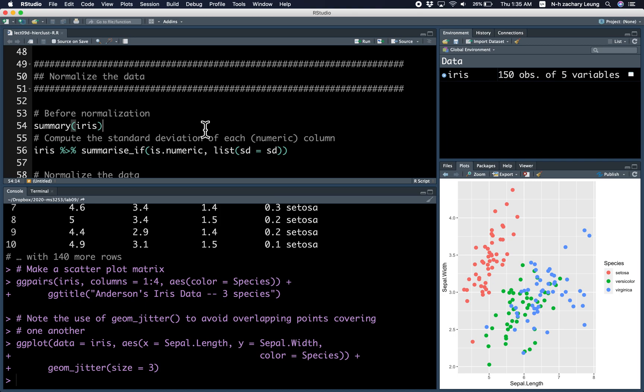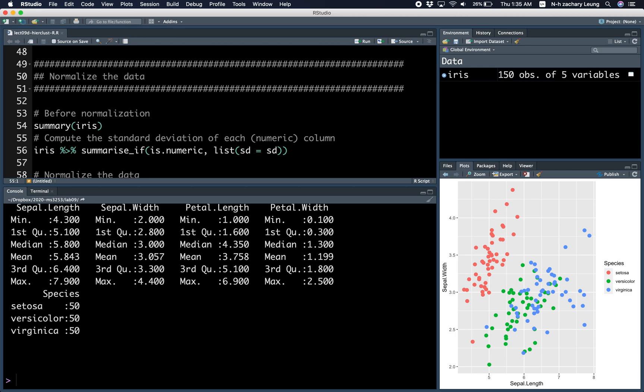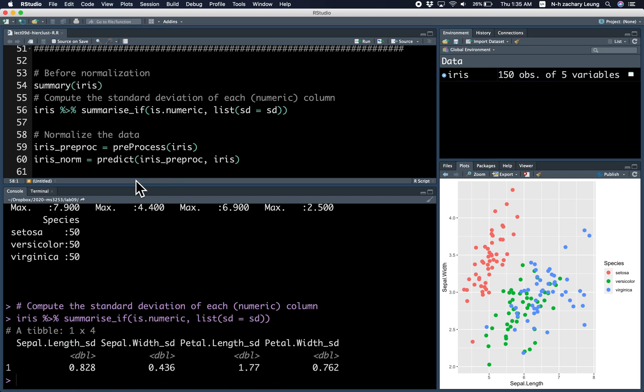If you look at the iris data frame before normalization, you'll see the summary statistics and the standard deviation. Here I use the summarize_if function, which basically computes the standard deviation for every column that's numeric.